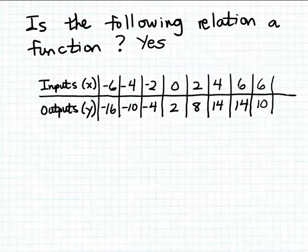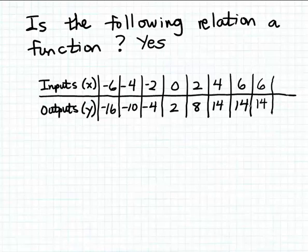It's okay to have the same output matched with two different inputs in a function, but you cannot have the same input matched with two different outputs. On the other hand, if we add the ordered pair (6, 14) — repeating a pair already in the relation — this is still a function. Although input 6 appears twice, it's matched with the same output 14 in both cases. It's a bit redundant, but it's still a function because no input is matched with two different outputs.